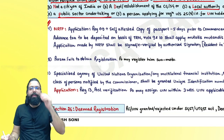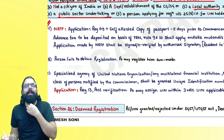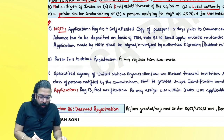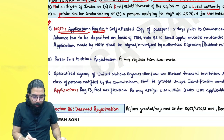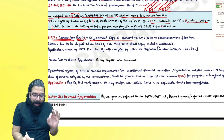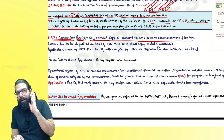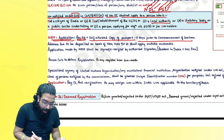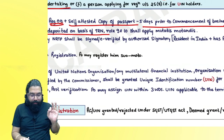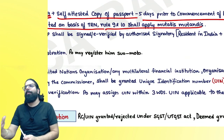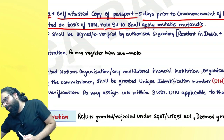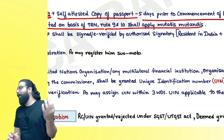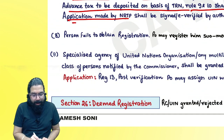Section 25(7): a non-resident taxable person (NRTP) coming from outside India must apply in FORM GST REG-09, along with a self-attested copy of the passport, five days prior to commencement of business. Whatever tax liability is anticipated, advance tax must be deposited on the basis of a temporary reference number. Rule 9 and Rule 10 apply mutatis mutandis — the government will verify the application and grant the registration certificate.